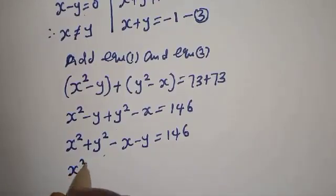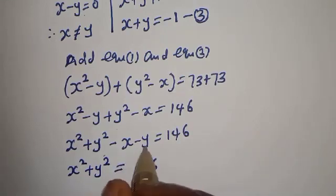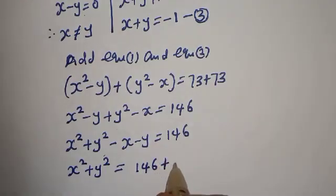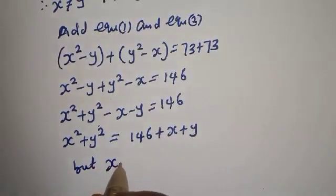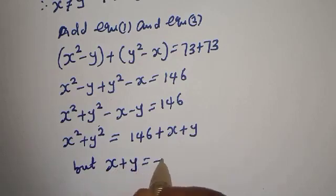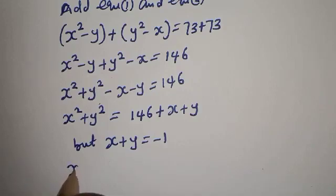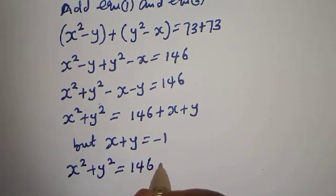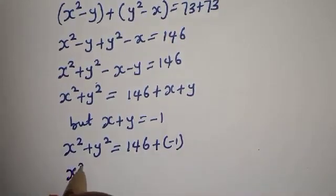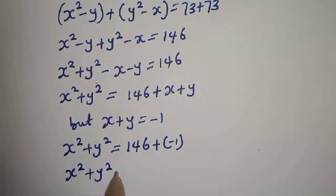So x squared plus y squared equals 146 plus x plus y. If we take the minus x minus y to the other side it becomes plus x plus y. But x plus y equals minus 1, so x squared plus y squared equals 146 plus (minus 1), which gives x squared plus y squared equals 145. Let's call this equation 4.